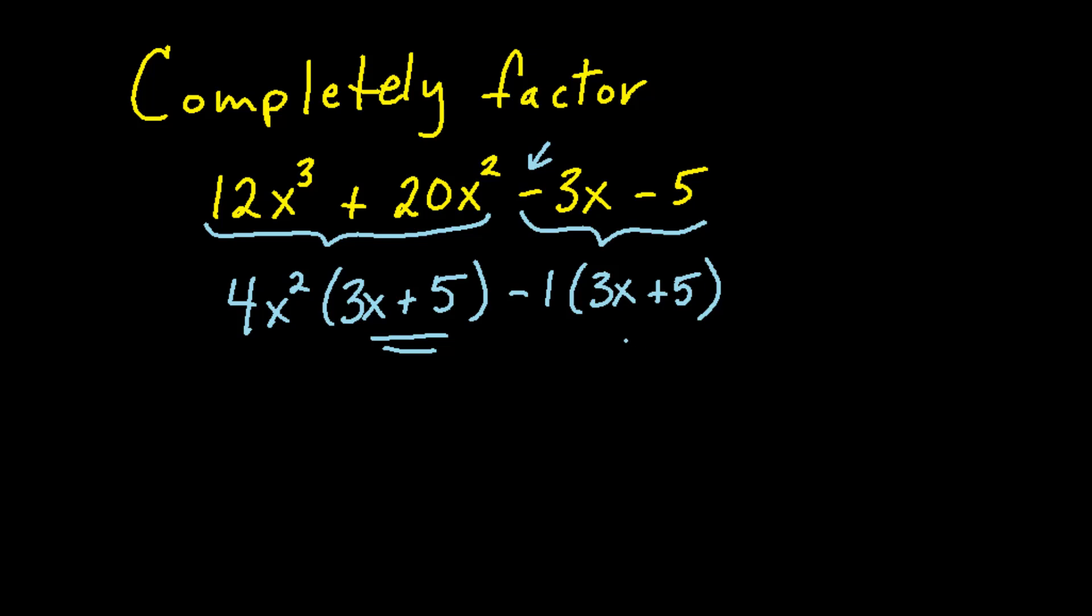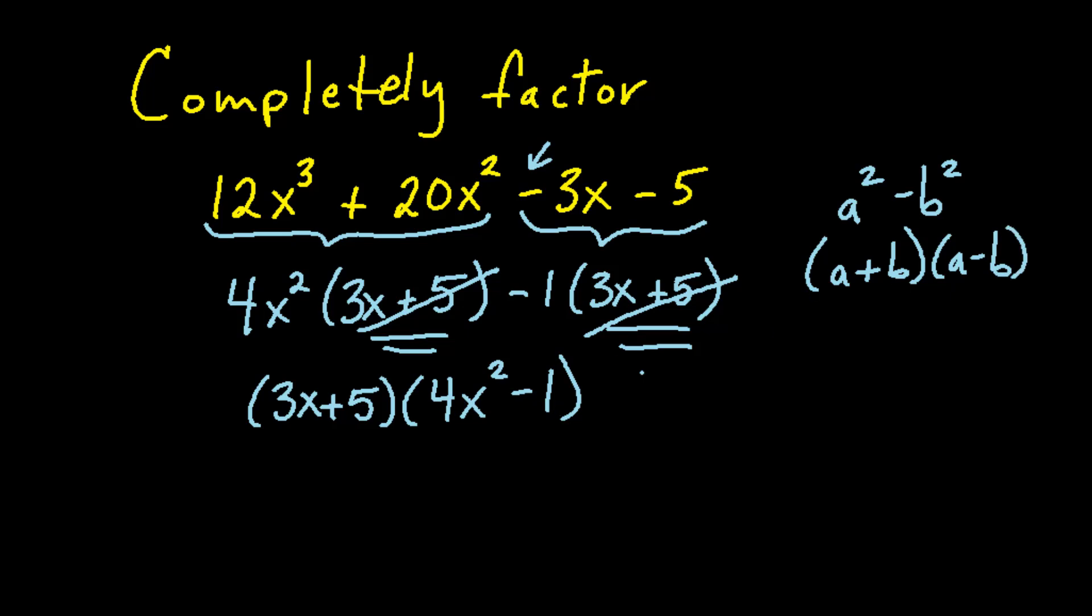We can see now that we have the same binomial, and that means this is factorable by grouping. By grouping, we pull out the (3x + 5) from both of these terms, and the last two factors that are in front of these go into their own set of parentheses. At this point, we should recognize that this last binomial is the difference of two perfect squares. Using the formula a squared minus b squared factors into (a + b)(a - b), we can factor 4x squared minus 1 into (2x + 1)(2x - 1). And that will be our final answer: (3x + 5)(2x + 1)(2x - 1). That's the complete factorization.